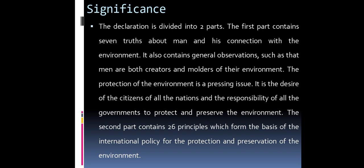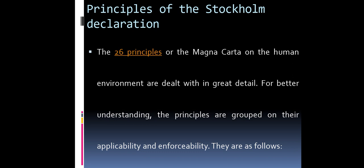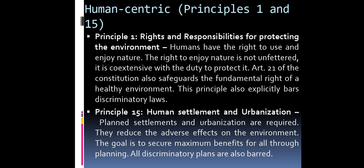Principles of the Stockholm Declaration. The 26 principles, or the Magna Carta on the human environment, are dealt with in great detail. For better understanding, the principles are grouped on their applicability and enforceability. Human-centric principles: Principles 1 and 15. Principle 1 — Rights and responsibility for protecting the environment. Humans have the right to use and enjoy nature, but this right is not unfettered; it is co-existent with the duty to protect it. Article 21 of the Constitution also safeguards the fundamental right to a healthy environment. This principle also explicitly bars discriminatory laws.